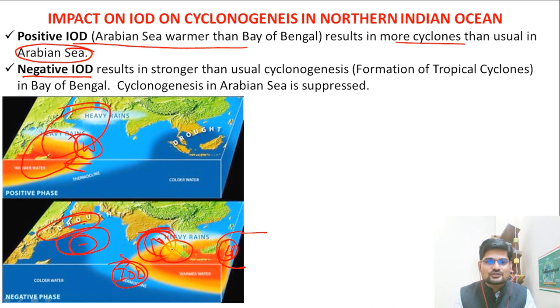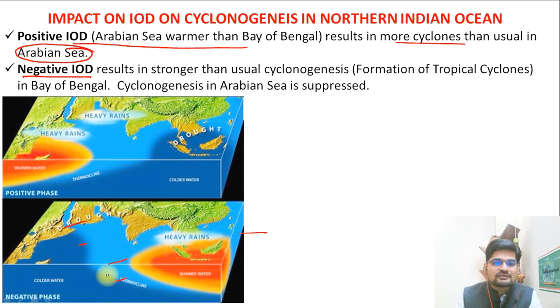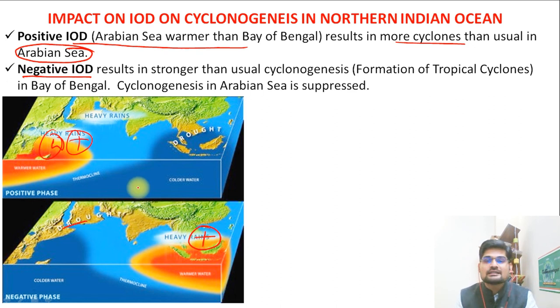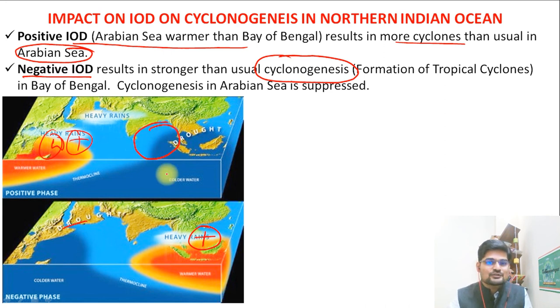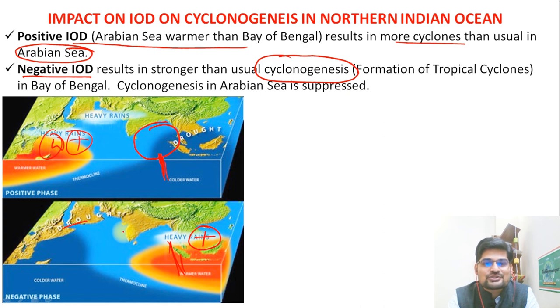Positive IOD means the west has more heat and moisture — that is positive for Indian monsoons as well. Negative IOD means the east has more heat and moisture. To summarize: positive IOD is warming on the west (Arabian Sea side), which leads to more rainfall for India and more Arabian Sea cyclones; negative IOD means more moisture on the eastern side. Now that we have understood the Indian Ocean Dipole, its relationship with El Niño, and its impact on the Indian monsoon, stay tuned for more sessions on climatology. Stay safe, all the best.